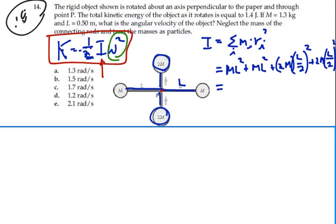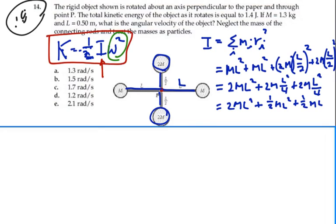So this is going to equal ML squared plus ML squared, which would be 2ML squared, plus 2M times L squared over 4, plus 2M times L squared over 4. So this is 2ML squared plus one-half ML squared plus one-half ML squared. So we have 3ML squared as our moment of inertia for this object.